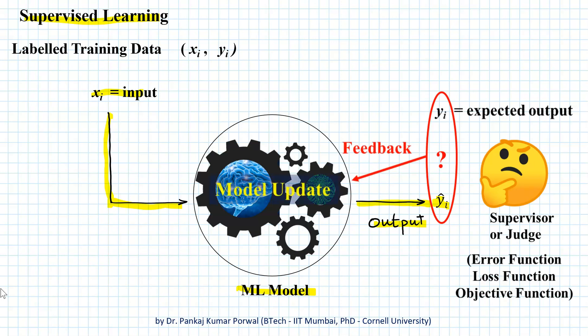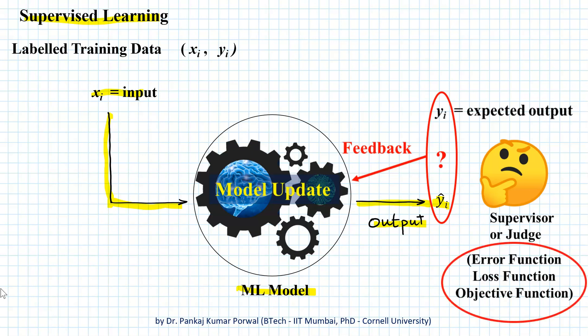On the basis of this feedback, the parameters of the model are updated, and this updation of parameters is called learning. Because this learning is taking place under the supervision of a supervisor, this learning method is called supervised learning. Our supervisor is nothing but an error function, or a loss function, or an objective function, and this determines how and by what magnitude our parameters will be updated.